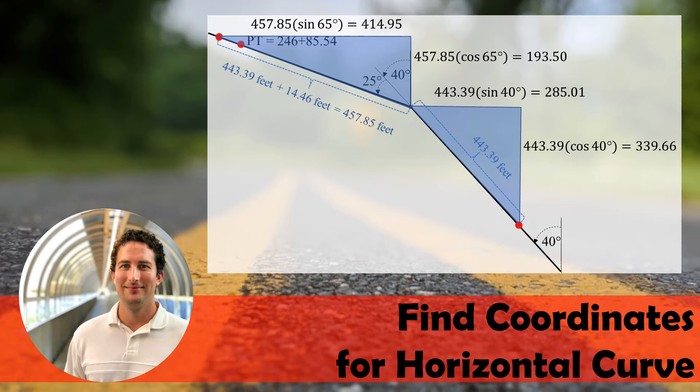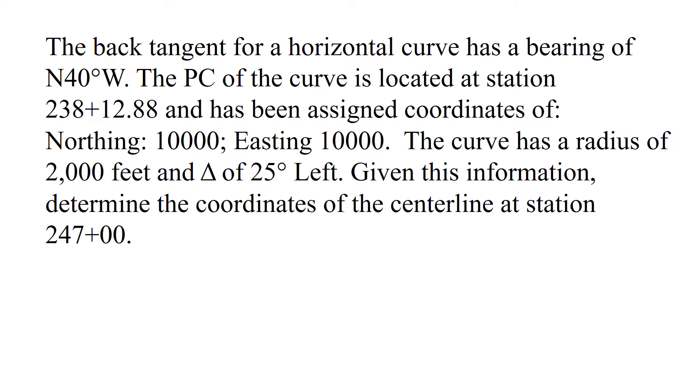This is an example problem of finding coordinates in terms of northings and eastings for a horizontal curve. Our specific question: we're told that the back tangent for a horizontal curve has a bearing of north 40 degrees west.